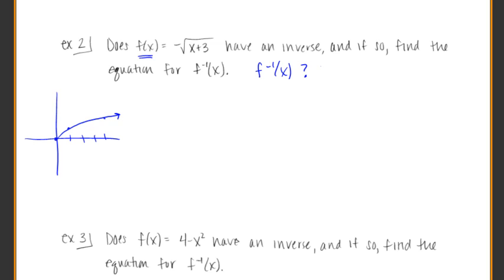And if we use our rules of transformations, this says that we want to take that graph and shift it left 3. So now it would be like that. And then we want to flip it over the x-axis. So now it's coming down like that. So does that look like something that can pass the horizontal line test? Definitely.